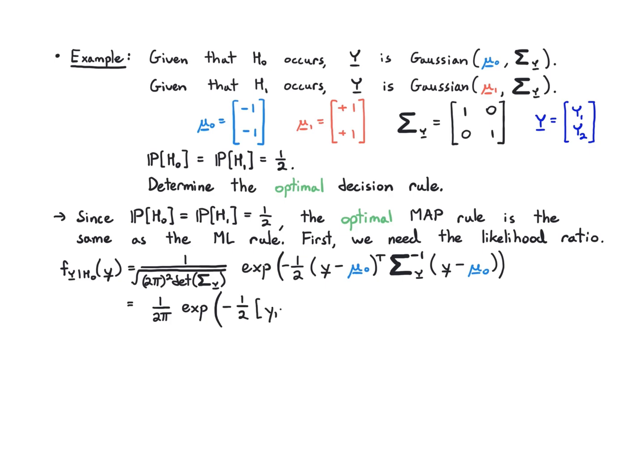I'm going to work out what this looks like by simplifying out of these vectors. So first here I have this transpose vector, so I have y1 minus the mean value which is minus 1, and y2 minus the mean value minus 1. Then I have the inverse of identity which is identity, then y1 minus minus 1 and y2 minus minus 1. I've opened up all these vectors and matrices so I can see what's happening. It's pretty simple in this case, I get y1 plus 1 squared plus y2 plus 1 squared.